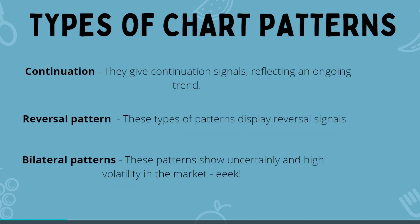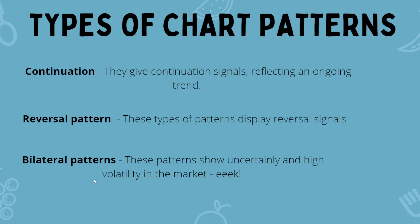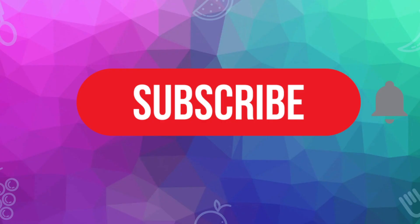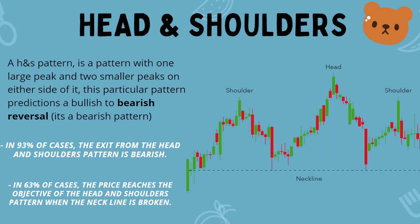The types of chart patterns we're going to look at: we've got continuation patterns, which give continuation signals reflecting an ongoing trend; reversal patterns, which display reversal signals; and also bilateral patterns, which are quite uncertain — almost bipolar. Volatility is usually high when these patterns exist.